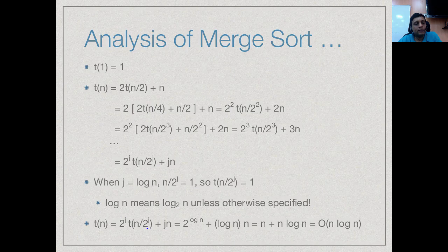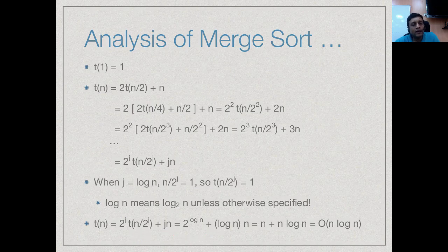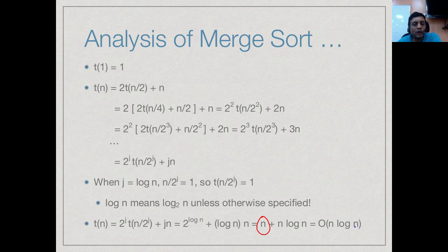After log n steps, the expression becomes 2^(log n)·T(1) + log(n)·n. Since 2^(log n) = n by definition of logarithm, and T(1) = 1, this simplifies to n + n·log n. Since n is O(n log n), the total is bounded by 2·n·log n. Therefore merge sort runs in O(n log n) time.